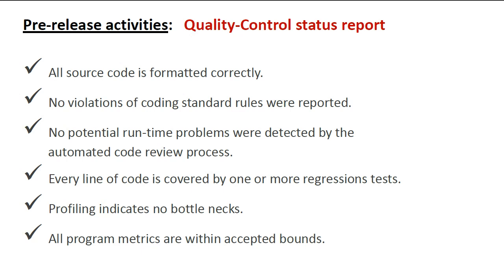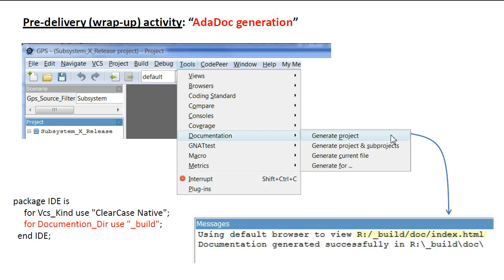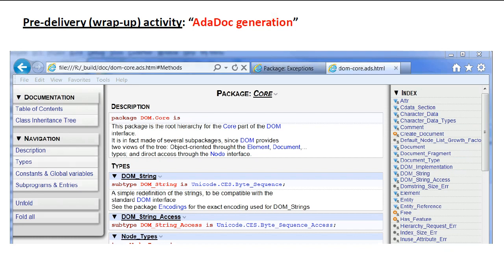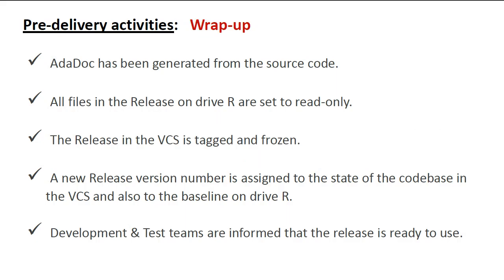So we're almost finished — just a few more items to wrap up. Once the release has been signed off, Adadoc is generated in a subdirectory called doc under build. All files in the release are set to read-only and the corresponding state of the release in the version control system is frozen. The generated Adadoc has nice features that enable efficient browsing of the code base from any machine with access to the company intranet. Adadoc has been generated from the source code, all files in the release on Drive R are set to read-only, the release in the version control system is tagged and frozen, a new version number is assigned to the baseline release on Drive R, and the development and test teams are informed that the release is ready to use.